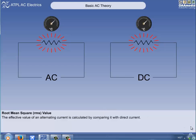The effective value of an alternating current is calculated by comparing it with direct current. The comparison is based on the amount of heat produced by each current under identical conditions.